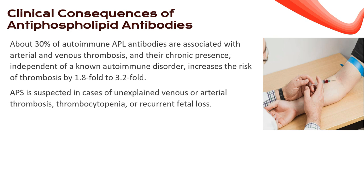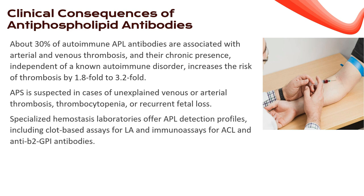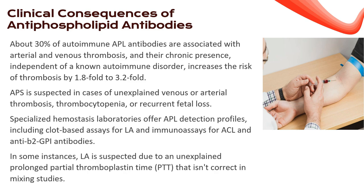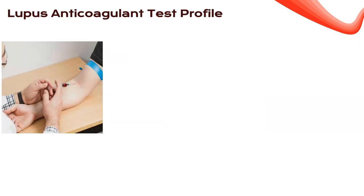APS makes an entrance with unexplained venous or arterial thrombosis, thrombocytopenia, or recurrent fetal loss. Specialized hemostasis laboratories offer APL detection profiles — clot-based assays for LA and immunoassays for ACL and anti-B2-GPI antibodies. Watch out for LA especially when an unexplained prolonged partial thromboplastin time (PTT) raises suspicions. The lupus anticoagulant test profile is a critical examination that clinicians employ when faced with potential clotting challenges.